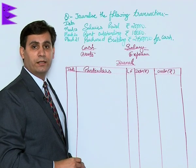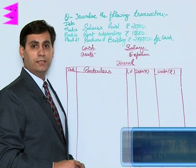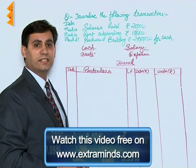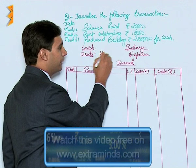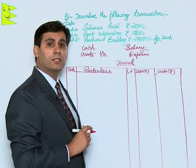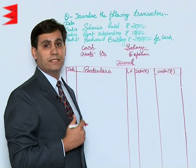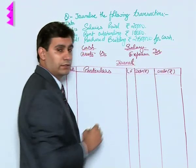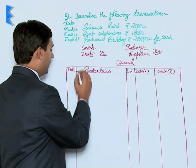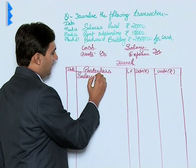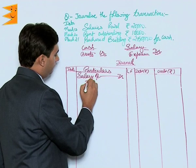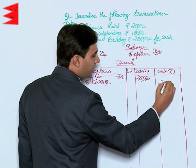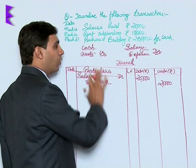For assets, whenever there is an increase in an asset it should be debited, and whenever there is a decrease it should be credited. Since we are paying cash, cash is going out — there is a decrease in cash, so cash should be credited. For expenses, the rule is: debit if expenses increase and credit if they decrease. Here expenses are increasing, so salary account should be debited. The entry appears as: Salary Account debited to Cash Account, rupees 20,000.